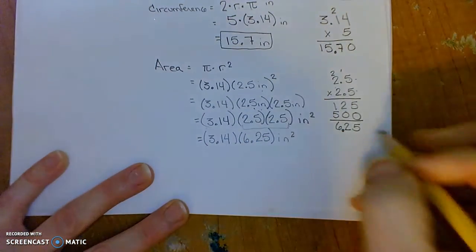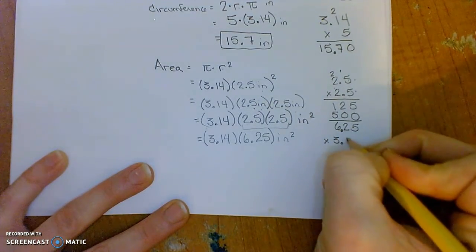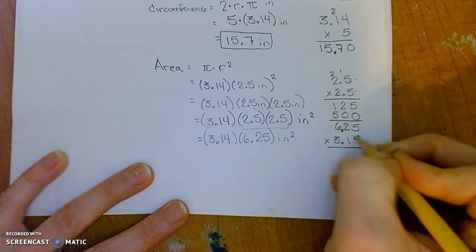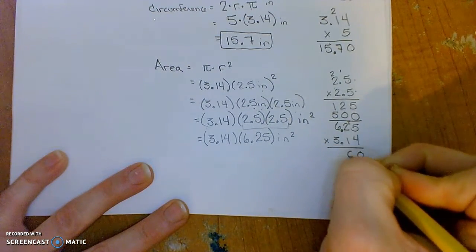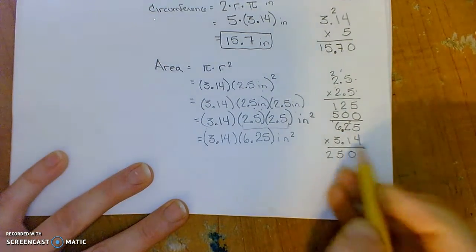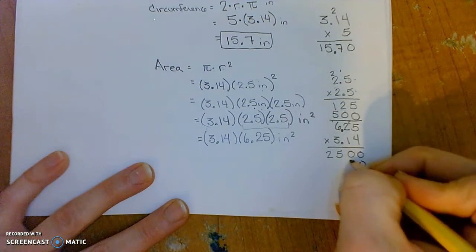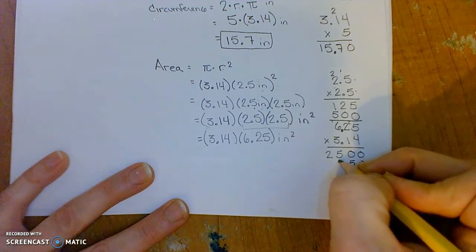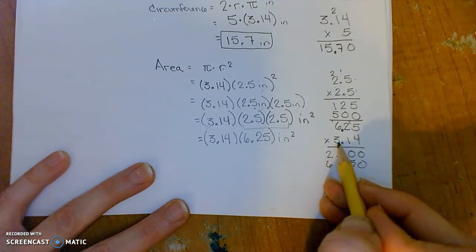So this will be 3.14 times 6.25 inches squared. So let's do that calculation. 6.25 times 3.14. 4 times 5 is 20, 8 plus 2 is 10, 24 plus 1 is 25. Let's move on to the 1 in the tens place. I'll put down my 0 placeholder. 1 times 5, 1 times 2, 1 times 6.